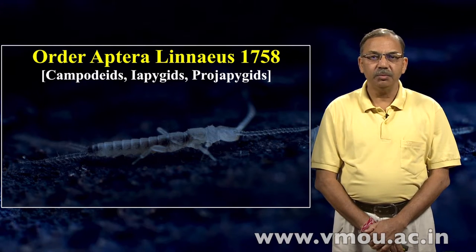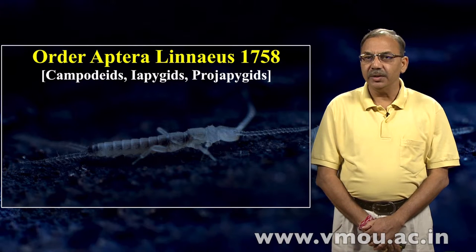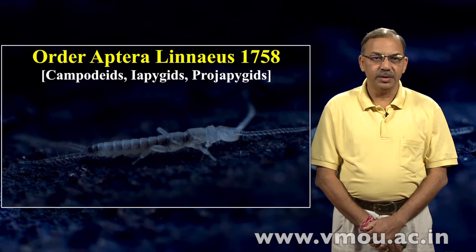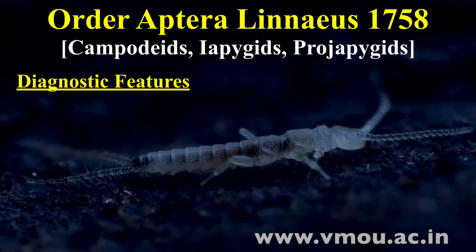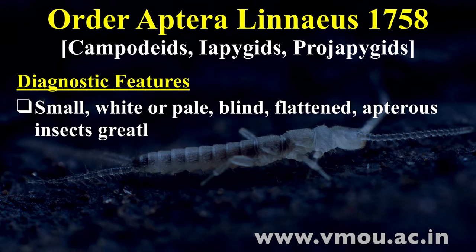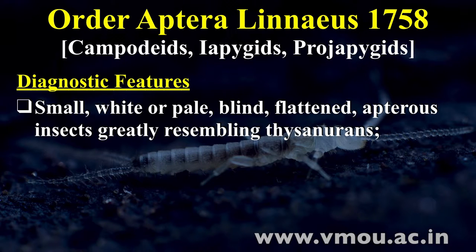आम तौर पर इन्हें commonly हम Campodids, Japygids और Pro-japygids कहते हैं। इनके diagnostic features अपने आप में unique हैं जैसे कि Aterigota के होते हैं — बहुत छोटे, सफेद या क्रीम कलर के, अंधे। इनकी आँखें नहीं होती हैं — यानी compound eye और Ocelli दोनों ही absent होती हैं। Flat body है, Apterous insect हैं यानि बिना पंखों के। ये बहुत अधिक मात्रा में Thysanura — एक दूसरा Apterigota का order — उससे मिलते-जुलते हैं।